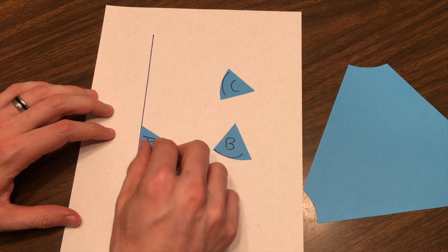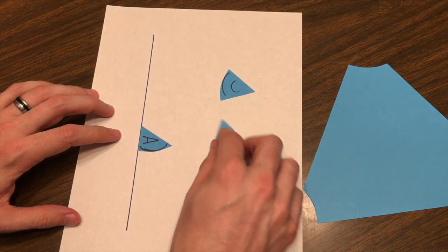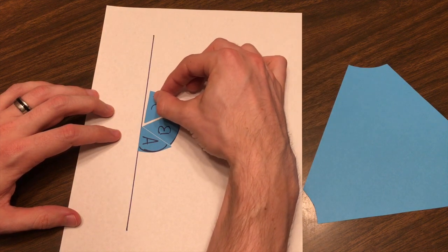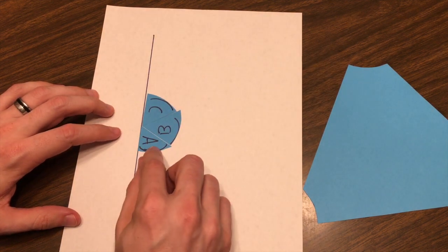So let's take angle A and put it up against the line. Let's take angle B, put it next to angle A, and then angle C should fit in right next to it. And, in fact, it does.